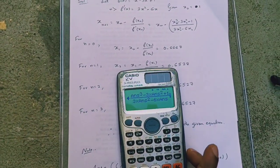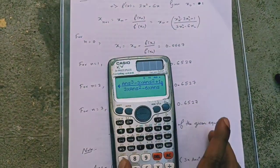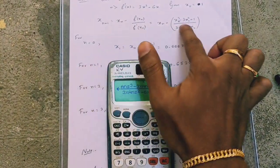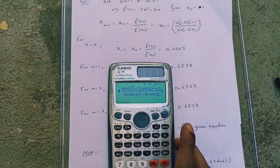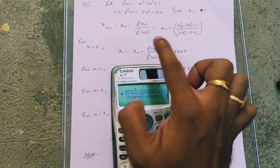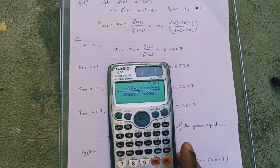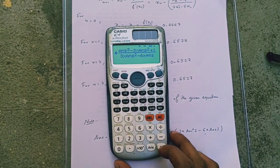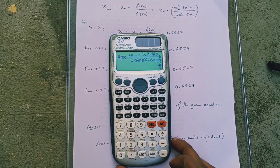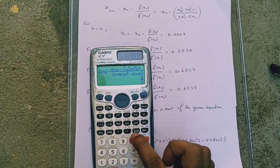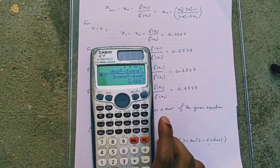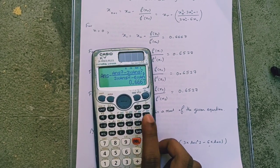For n equal to 0 in this formula, we have x 1 is x naught minus f of x naught by f dash of x naught. Now, the value of x naught is 1 that is here the answer. When I press equal, I get the first approximation x1 that is 0.6667.